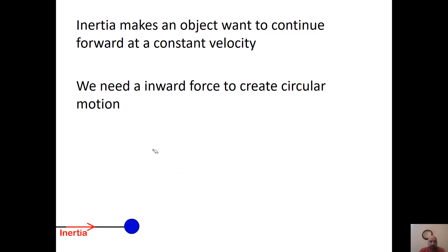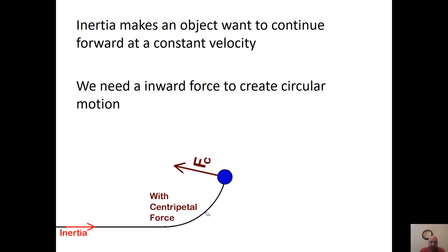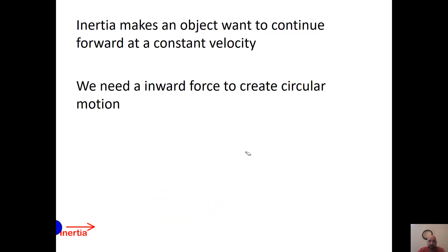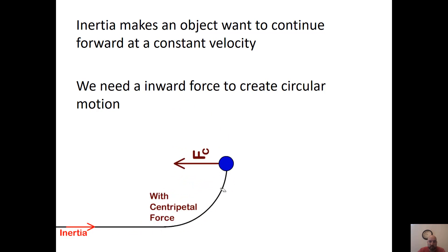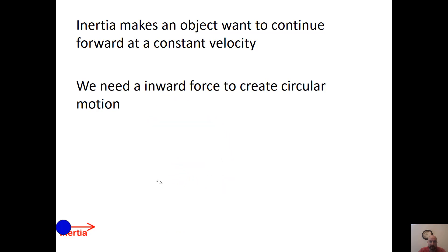Inertia makes an object want to continue forward. Initially the ball is just moving forward, but then some sort of centripetal force kicks in, and now it's still going the same velocity but the direction is changing. That's considered an acceleration. If you ever go around a corner in a car, you can feel that acceleration — you can be going 20 meters per second, but once you start turning you'll feel that change, and so you need some sort of force inwards to create that.